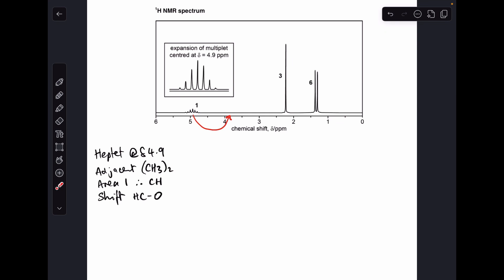Starting with that signal at 4.9 it's a heptet and you can see from the expansion you've got one two three four five six seven peaks in the signal. What does a heptet mean? It means there's an adjacent CH3 twice group.